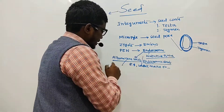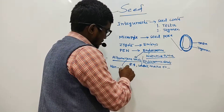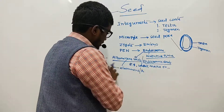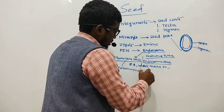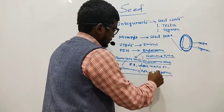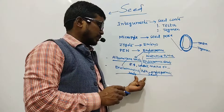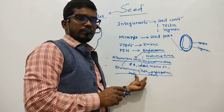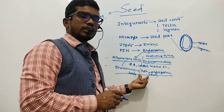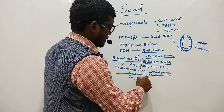The second type is non-albuminous or non-endospermic seeds, where the endosperm is completely utilized by the developing embryo and no endosperm is stored. In these seeds, food is stored in the cotyledons instead. Examples include pea and beans.